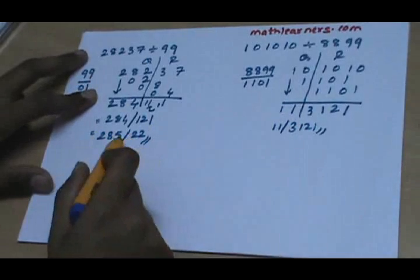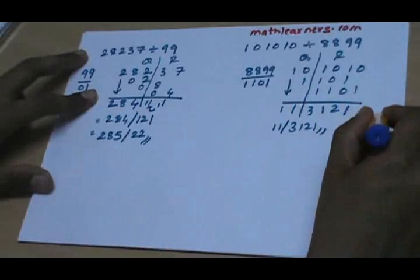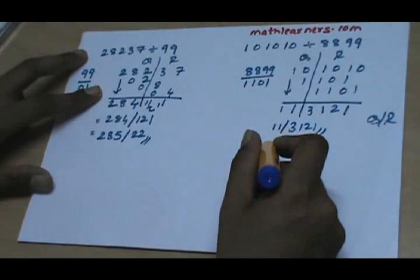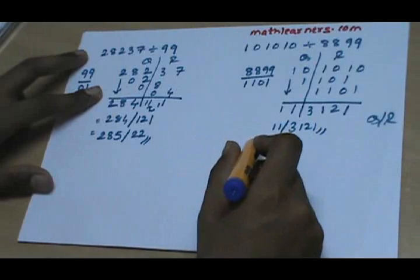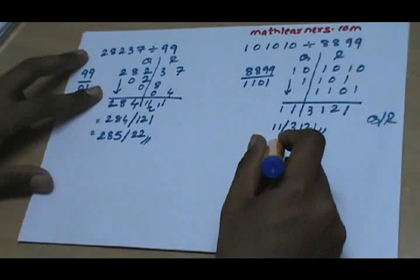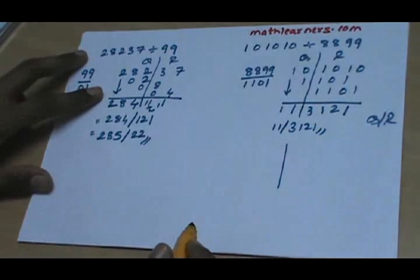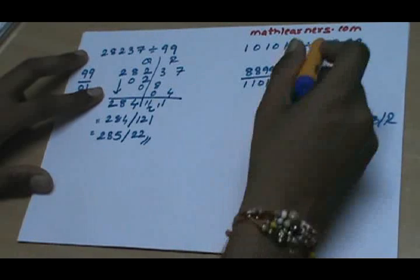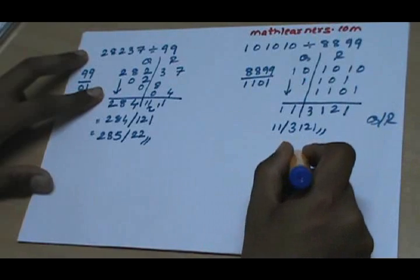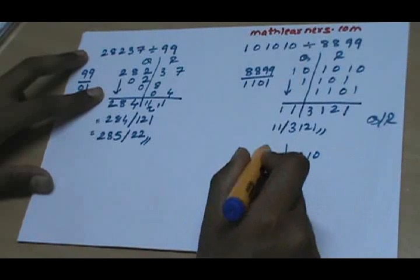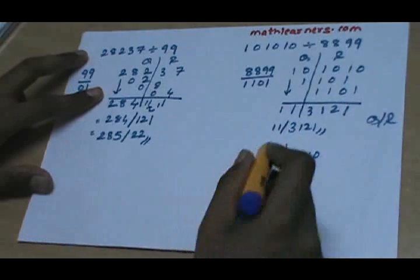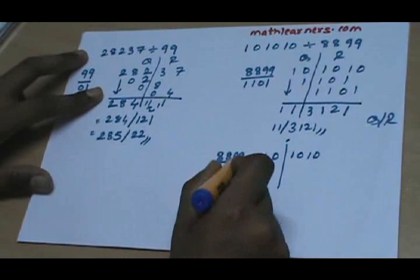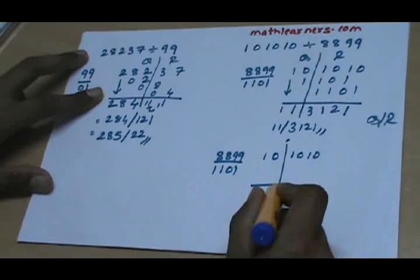In these two examples we got the answer in terms of quotient and remainder. Now let's say we want the answer in terms of a decimal point. The process almost remains the same, so let's take the same example: 101010 divided by 8899. Again we split the dividend into two parts such that the latter part has exactly the same number of digits as the divisor, so the latter part has 1010 and this part has 10. The only difference is that the vertical line now represents a decimal point. The divisor is 8899 and according to Nikhilam it will be 1101.